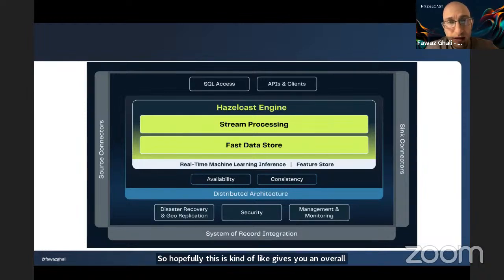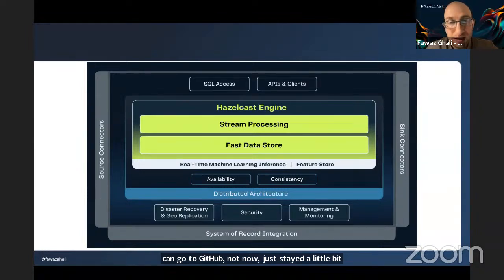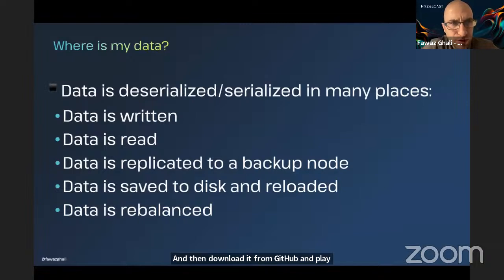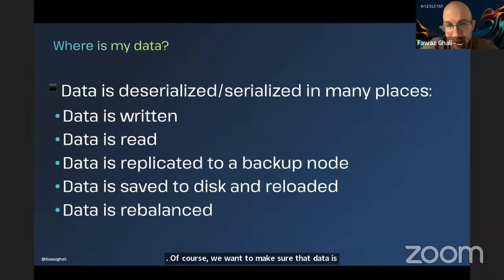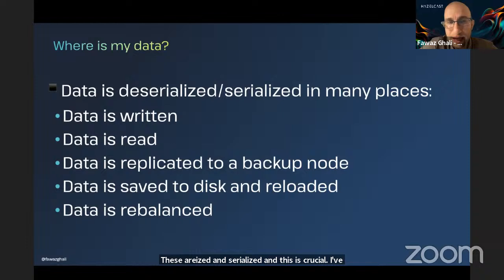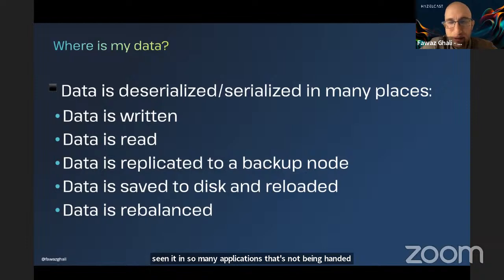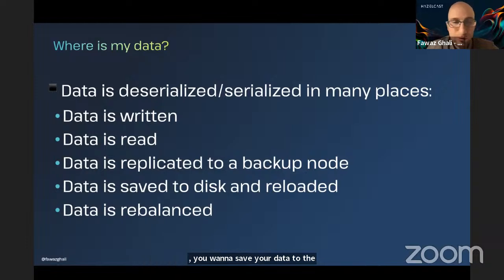For today's demo, we're going to talk about how you can use Hazelcast stream processing and fast data store with similarity search. I think it makes more sense to go to GitHub — not now, just stay until we finish — and then download it and play around with it. Of course, we want to make sure that data is being properly serialized and deserialized. This is crucial. I've seen it in so many applications that it's not being handled well — when you write your data, when you read your data, if you want to do replication or save data to disk, or rebalance between multiple clusters.